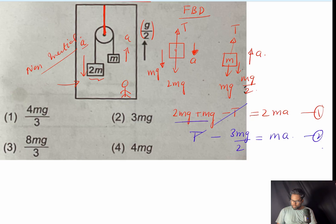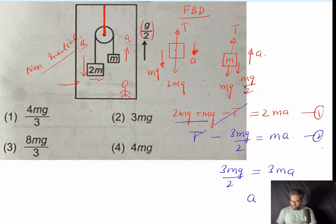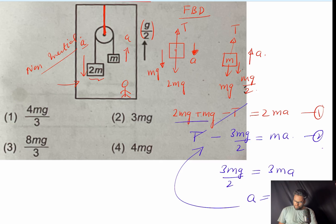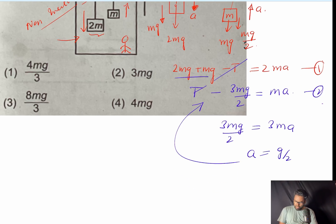Adding the two equations, tension cancels out. We get 3mg minus 3mg/2 equals 3m·a, which gives 3mg/2 equals 3m·a. So acceleration comes out to g/2.